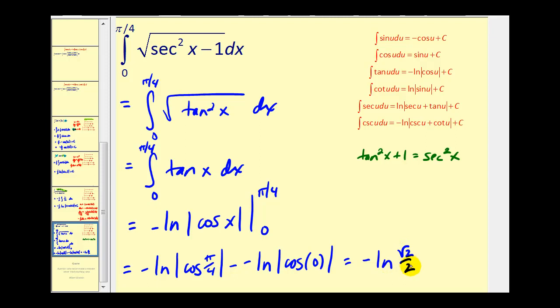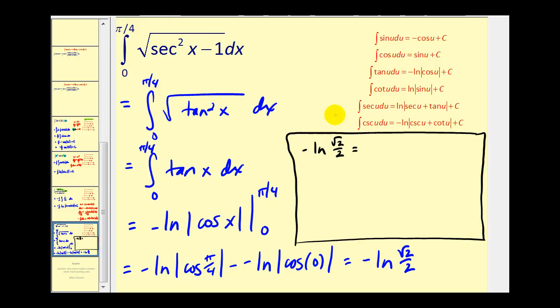We could break this up into two natural logs. Now sometimes some textbooks like to perform some fancy algebra on answers like this. So let's show the different ways this answer could be expressed. First we could break up this fraction by writing the difference of two logs. It would be the opposite of natural log square root two minus natural log two. Then if we cleared the parentheses we'd have a positive natural log two minus natural log square root two.